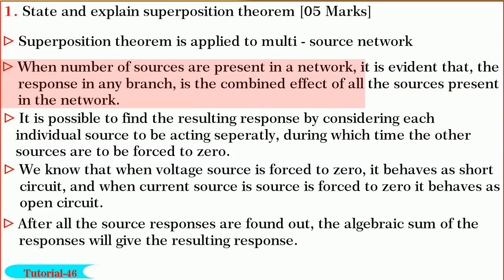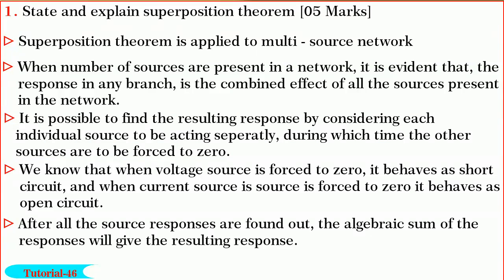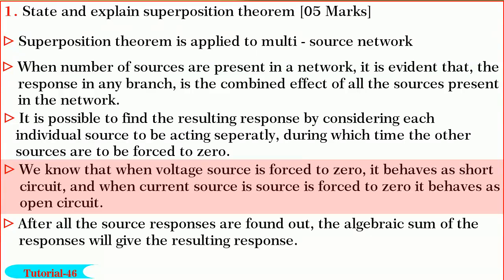When a number of sources are present in a network, it is evident that the response in any branch is the combined effect of all the sources present. It is possible to find the resulting response by considering each individual source acting separately, during which time other sources are forced to zero. When a voltage source is forced to zero, it is equivalent to a short circuit, and when a current source is forced to zero, it is equivalent to an open circuit.